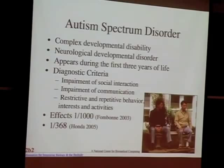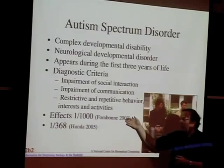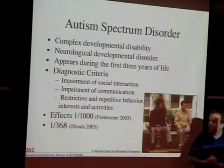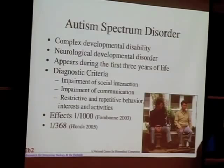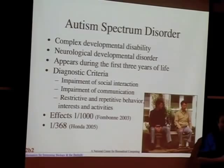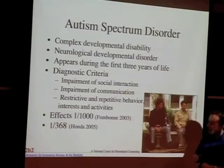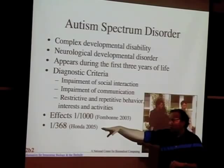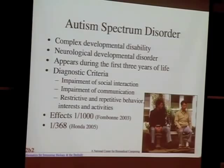Autism used to be estimated at one in 1,000; now figures range from one in 250 to one in 116. You have to be careful because there's a financial interest to lump everything into the autism spectrum disorder, both for how kids are handled in school and how federal funding is allocated. Based on my meta-analysis, it's somewhere around one in 300 to one in 200 — which puts it well beyond most monogenic diseases, including hemochromatosis, which is one in 300.